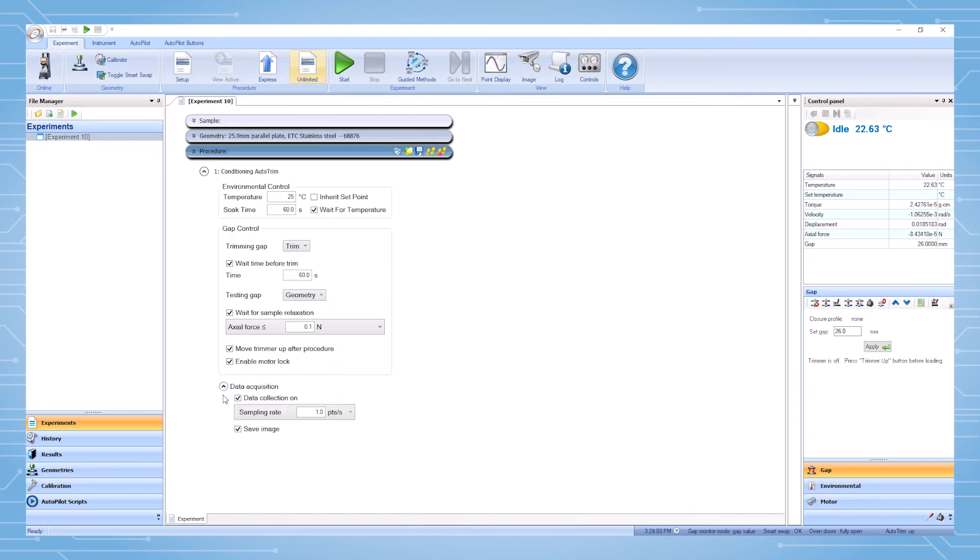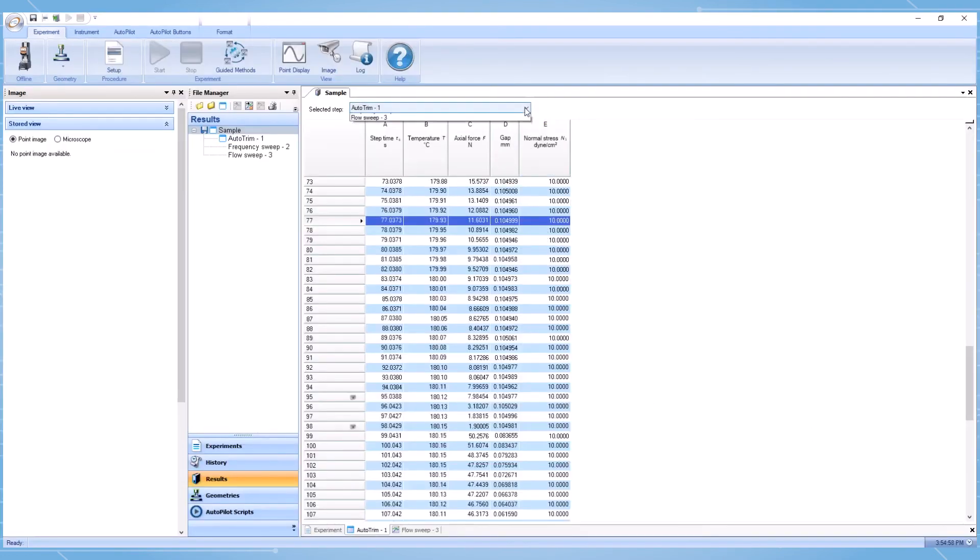In data acquisition, save image may be selected. If a camera is installed, a photo will be taken before and after the trimming step during the experiment. These images allow the user to monitor the trim of each sample.